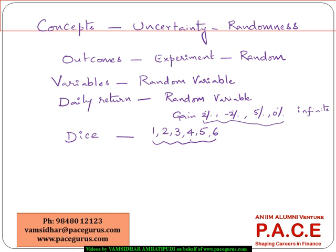In both cases, the outcome is random in nature and any of the possible values can occur. So any variable whose value is going to be random in nature, or which is going to have an uncertain value, is called a random variable. Modeling and understanding random variables is an important aspect in the journey towards understanding probability.